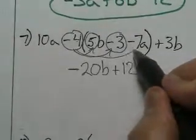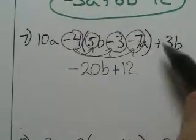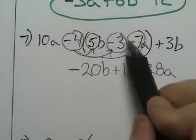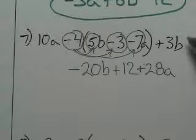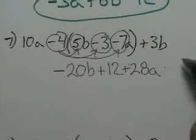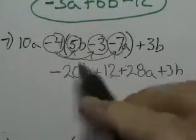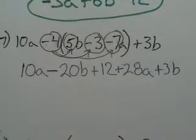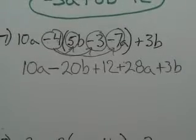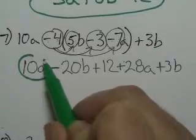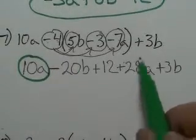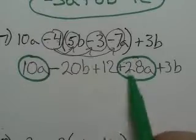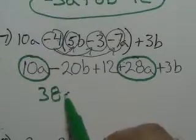Next I have negative 4 times negative 7. Four times seven is 28 — that's 28a. And there are two negatives, so they cancel. Now I'll bring the rest down: I have a plus 3b and a 10a. Now I just need to combine like terms. Let's start with the a's. I have 10a and 28a — positive 28a. Ten and 28 would make 38, so there's 38a.